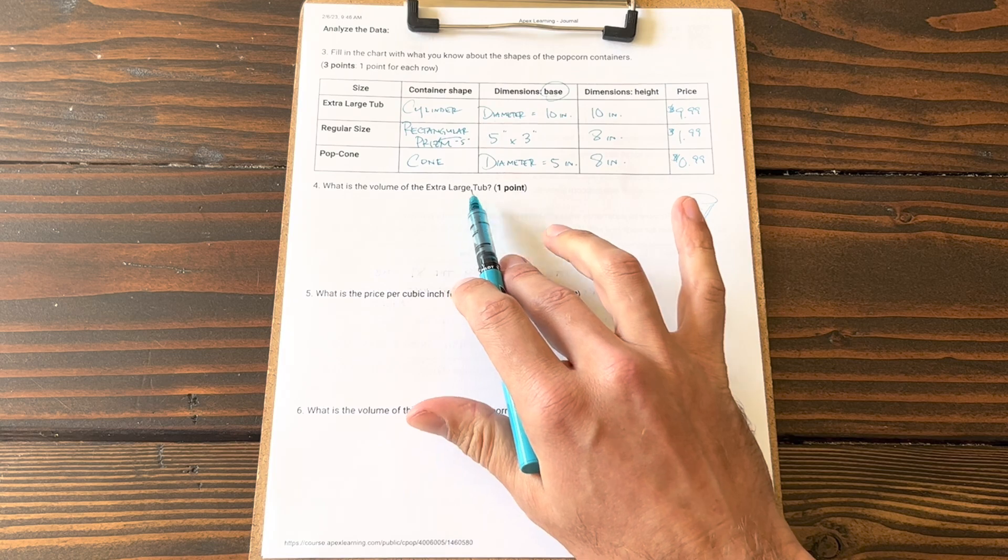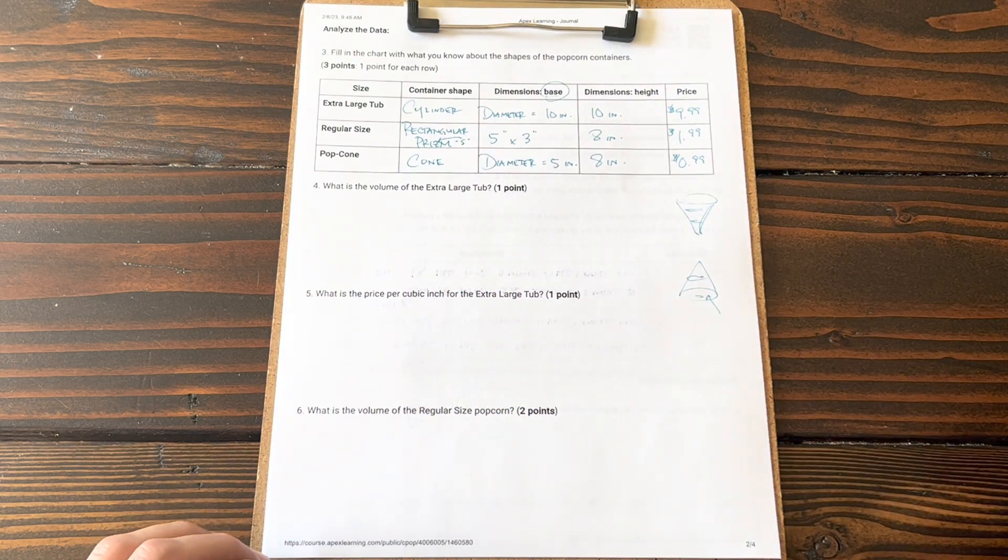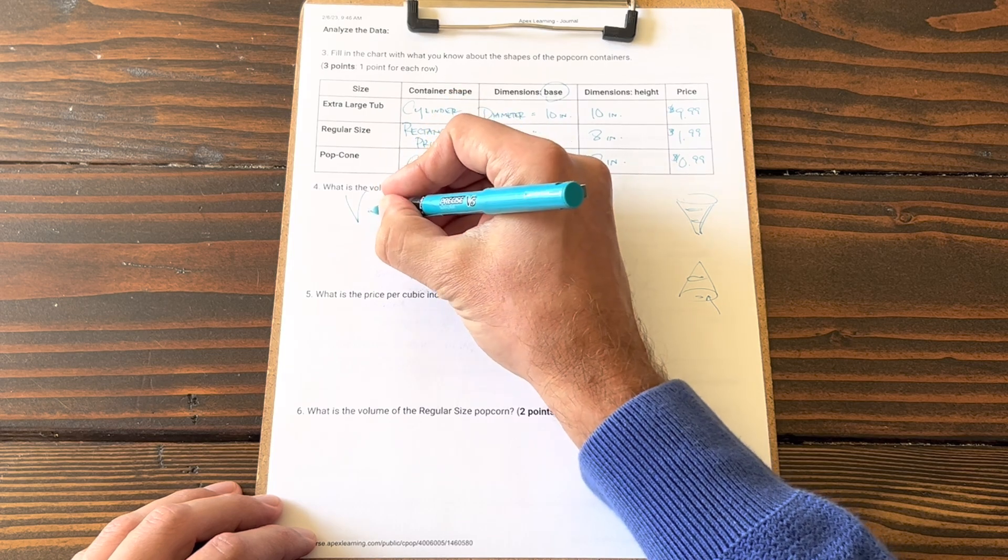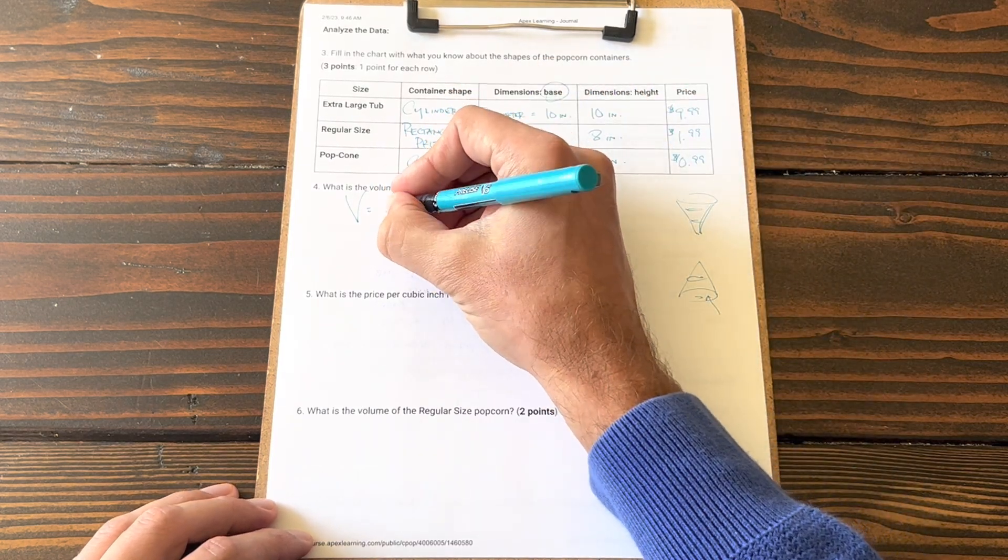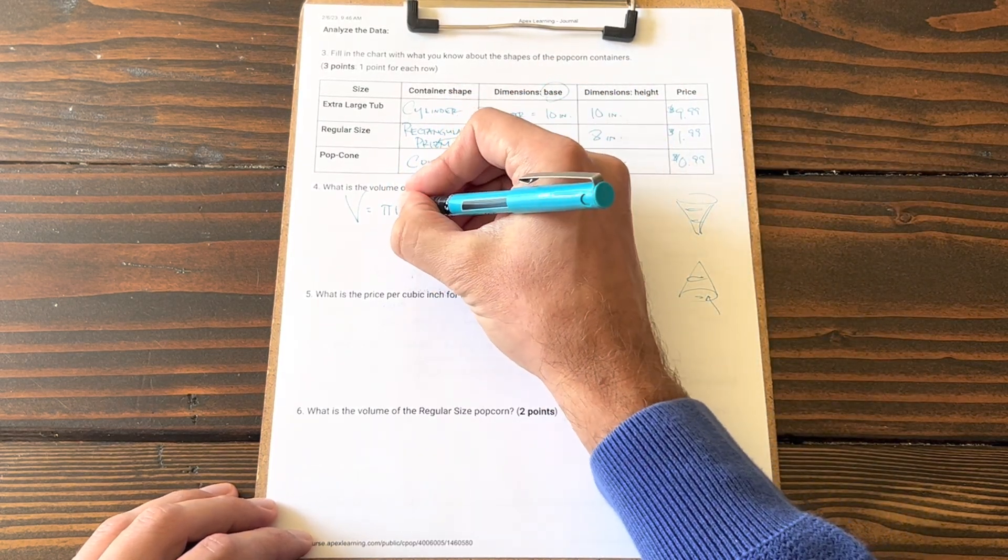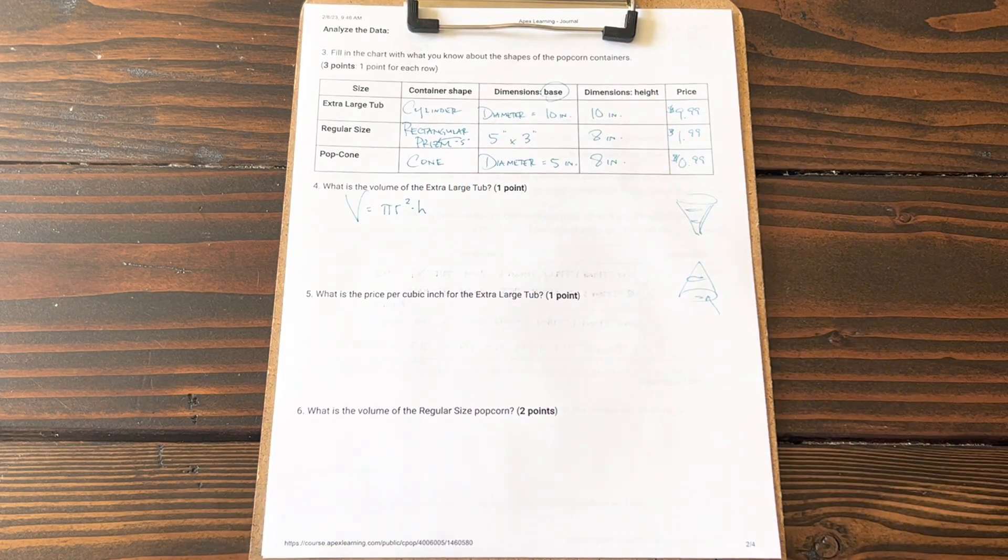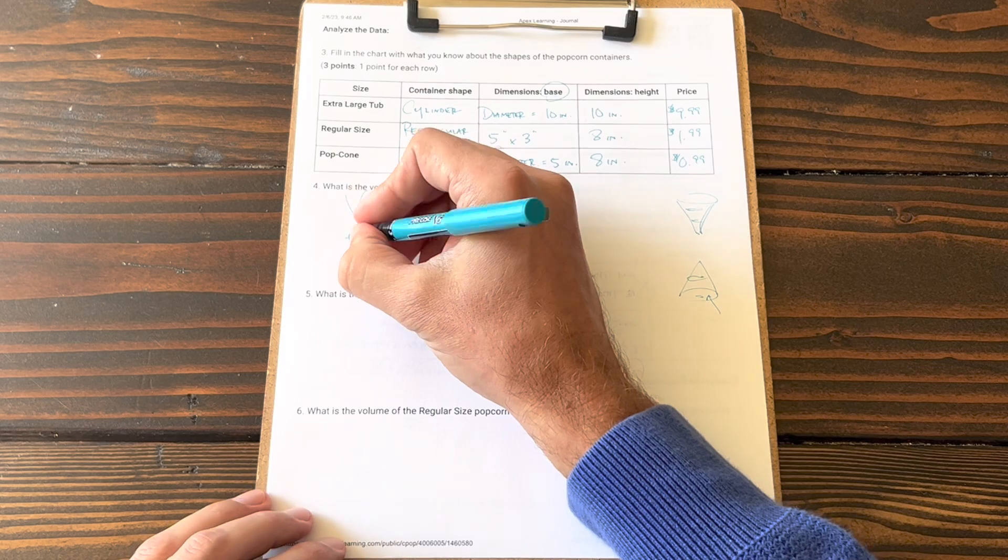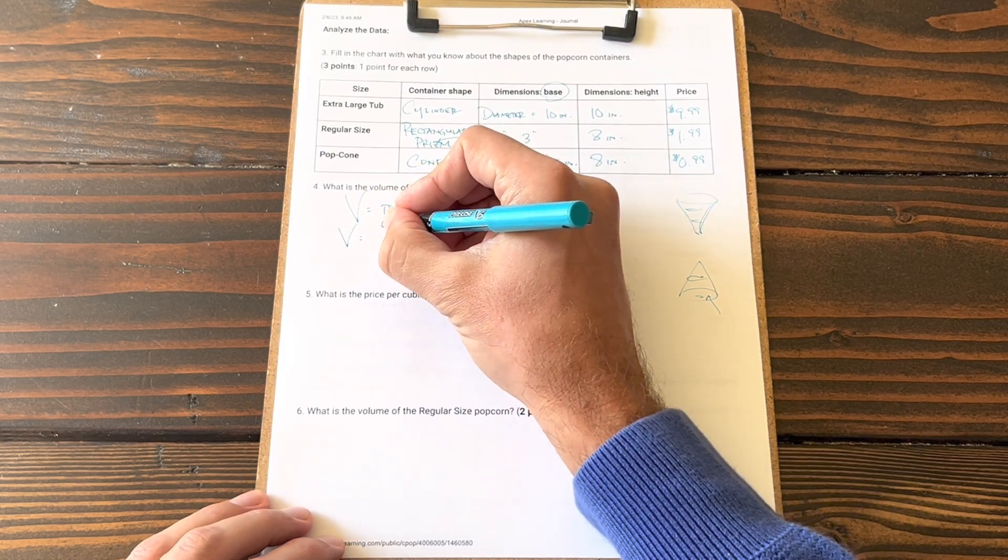What is the volume of the extra large tub? Let's pull the volume formula for a cylinder. The volume of any cylinder is π r² times h, r being the radius, h being the height.